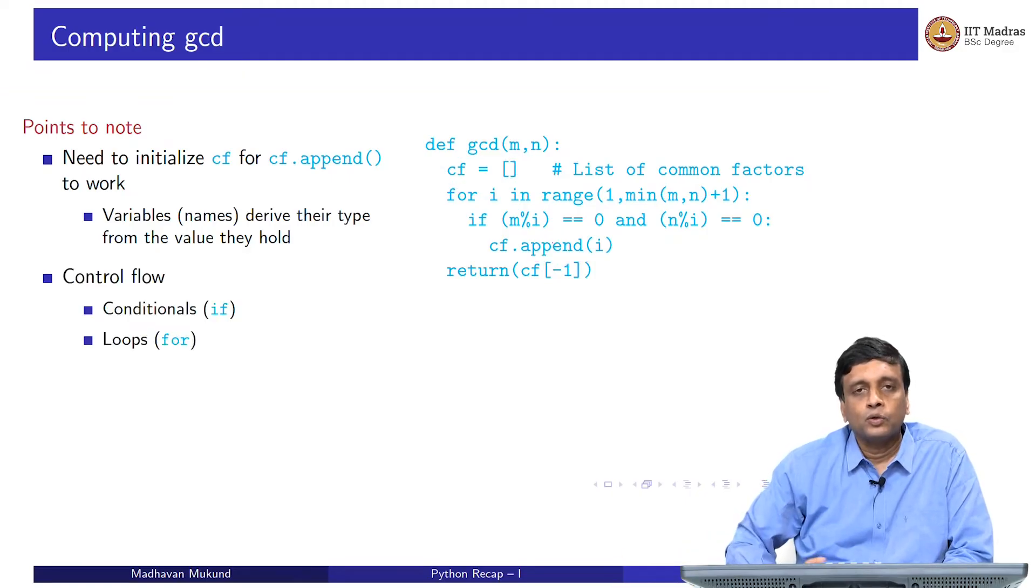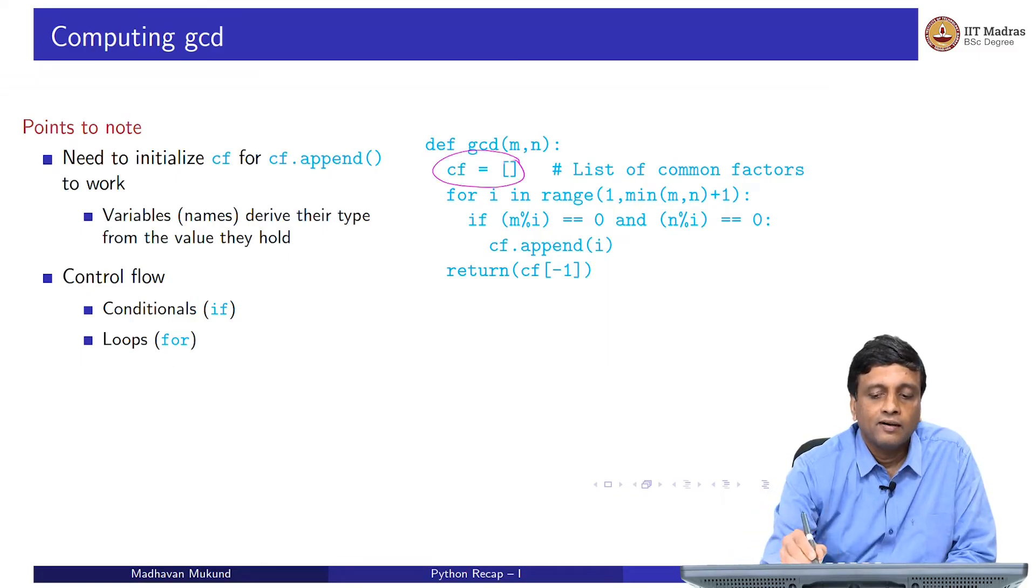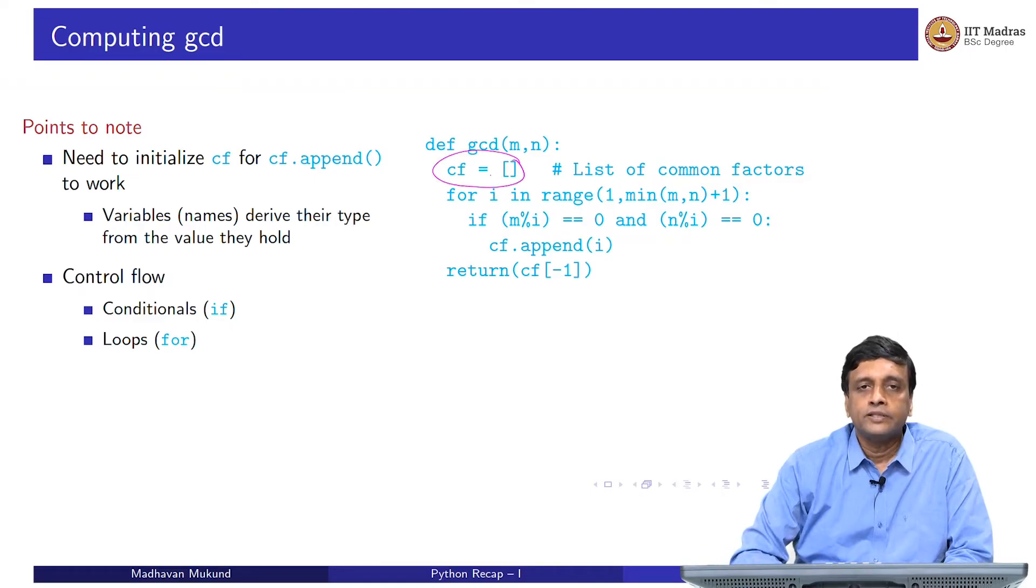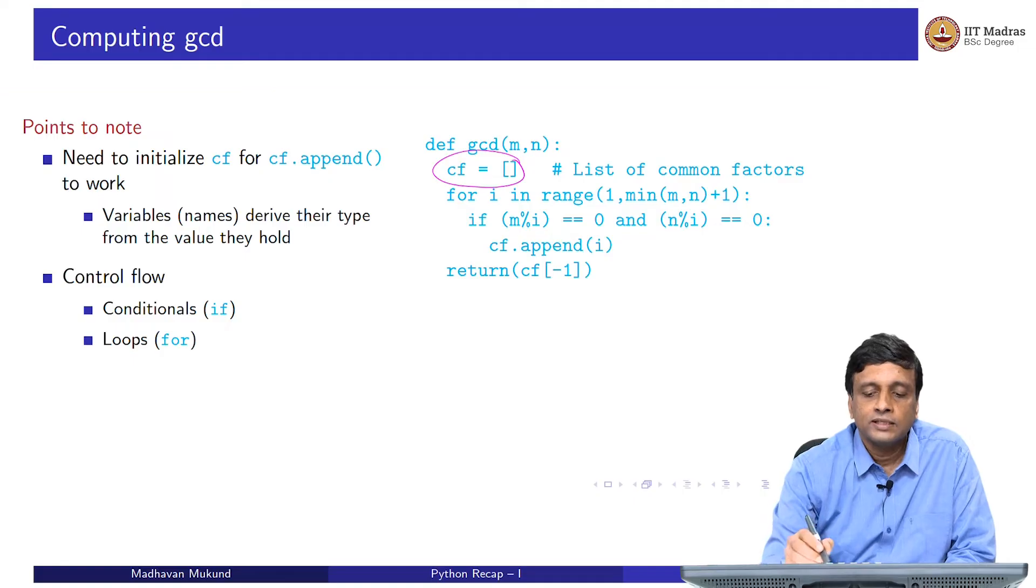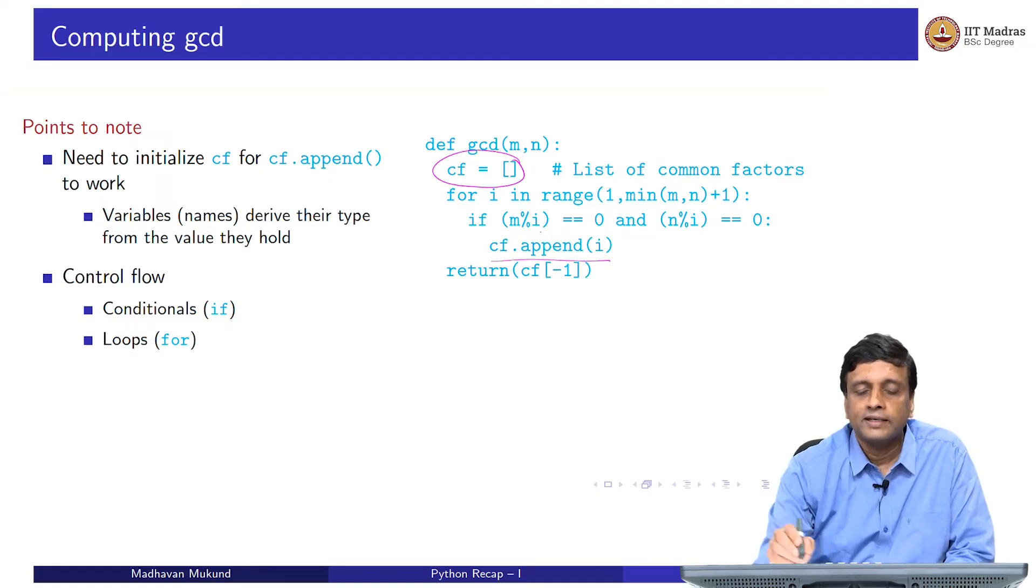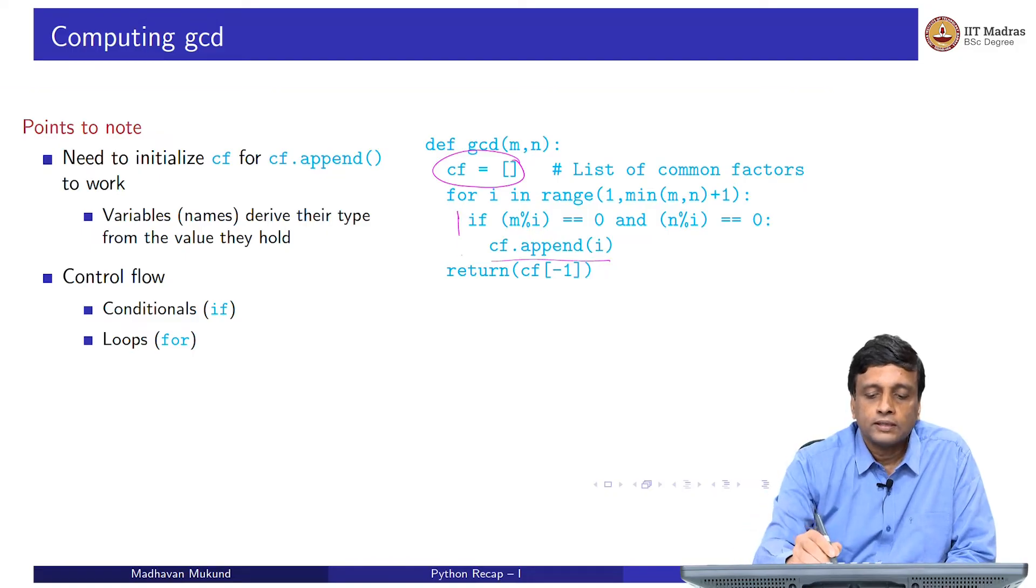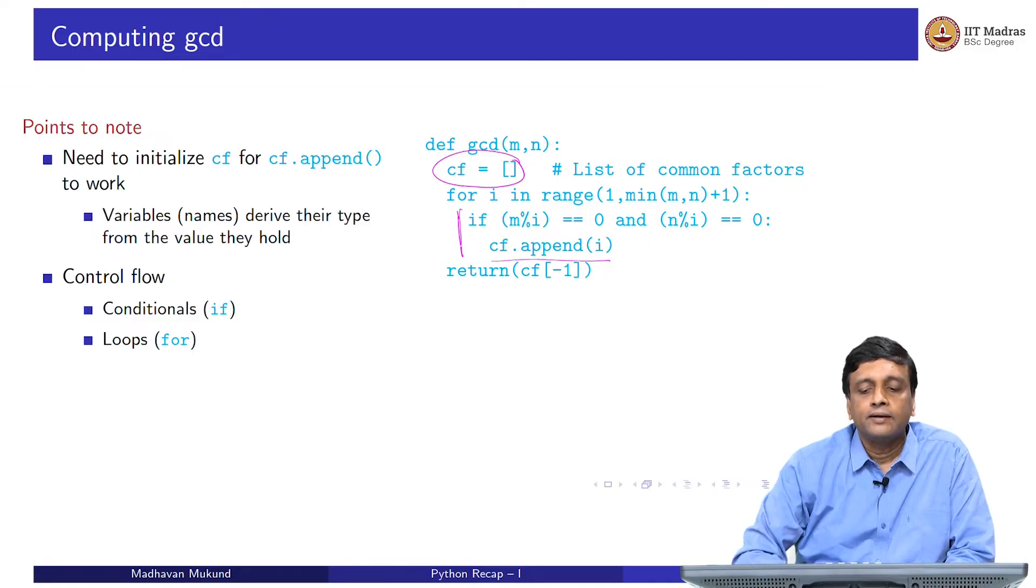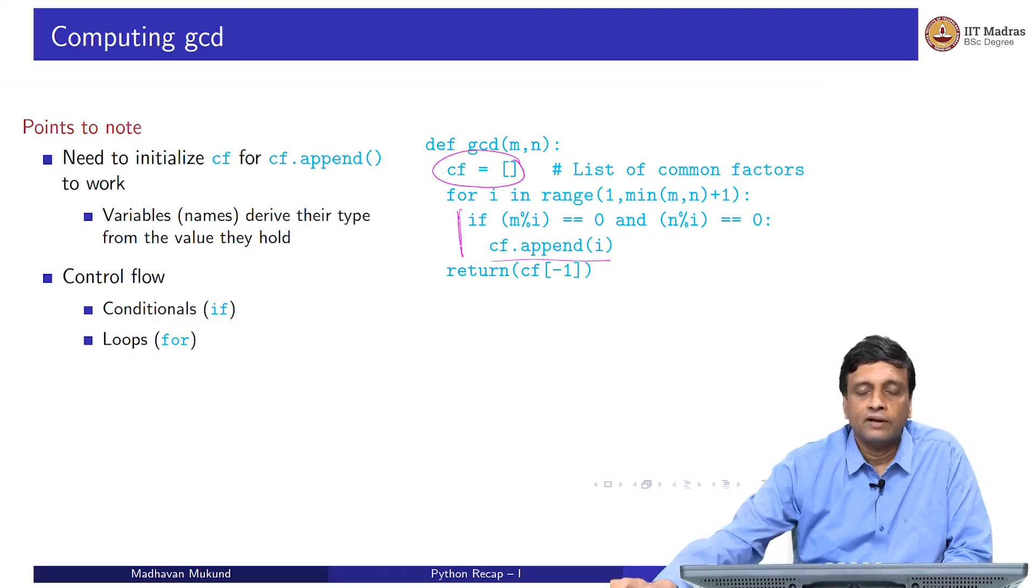Then of course, we are using two basic elements of Python control flow. The assignment statement is this one which assigns an expression or a value in general to a name. But we need to run through a sequence of statements in some order or maybe repeated. We have conditional statements. This statement is executed provided the condition that i divides both m and n is true. And overall, this statement is repeated a certain number of times and that is what for loop does. We have loops and we have conditionals.